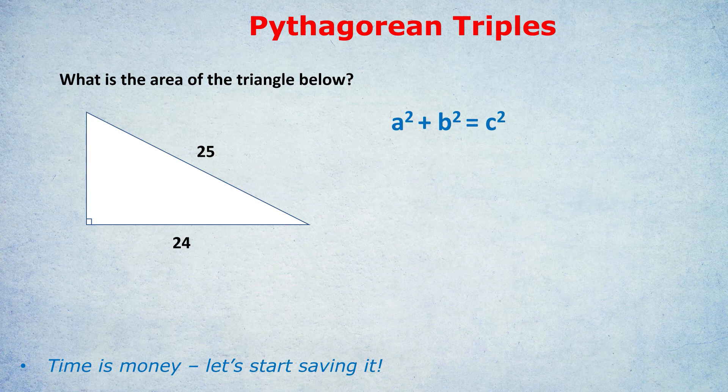I was completing a Magoosh practice quant section for my channel, and I came across a question where I used an amazing shortcut called Pythagorean triples. I realized I hadn't done a video on this, so I thought what better opportunity than to teach you about Pythagorean triples, which can save 30 to 60 seconds if it comes up compared to if you didn't know the trick.